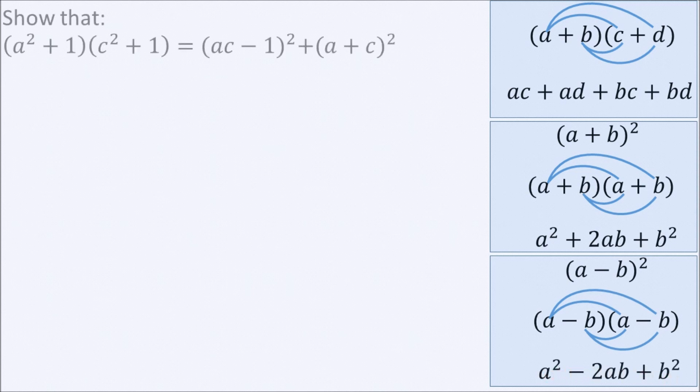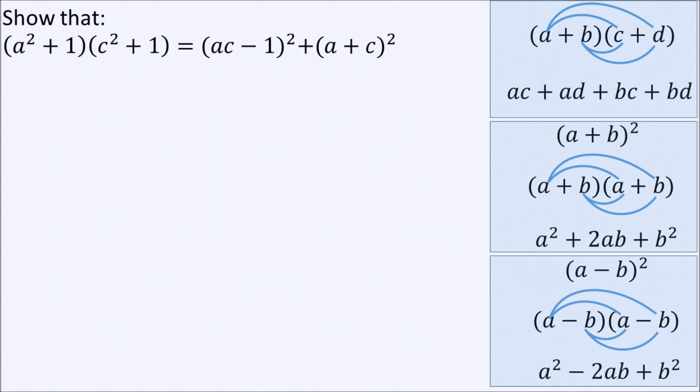Keeping these concepts in mind, we'll now try to tackle an IGCSE exam question. It says show that A squared plus 1 multiplied by C squared plus 1 equals AC minus 1 all squared plus A plus C all squared.